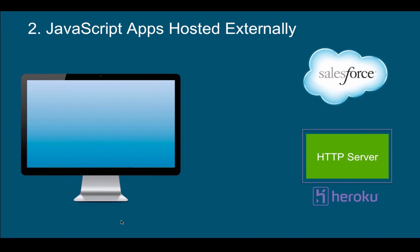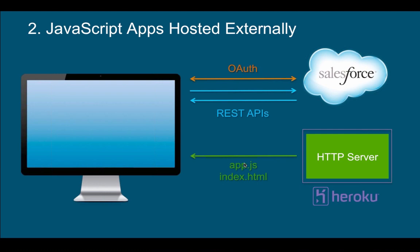Let's move on to the next architecture, which is already a little more sophisticated — an external app. It's a custom app that doesn't live inside your Salesforce instance. It exists on your own server, hopefully a Heroku server. This application is a JavaScript app made of HTML and JavaScript, hosted externally, but you want to integrate with Salesforce. To do that, you'll need to authenticate using OAuth and then get data from Salesforce using the REST APIs.